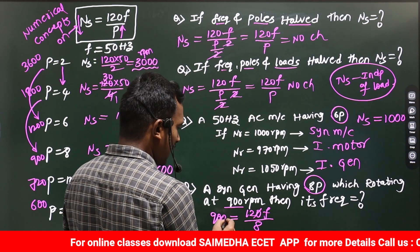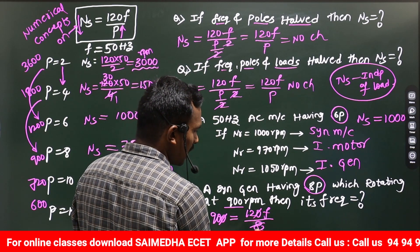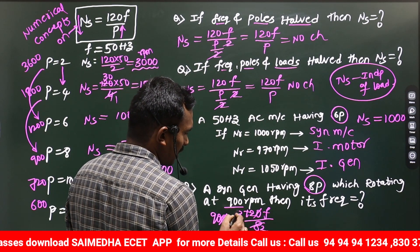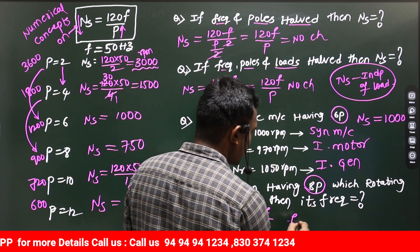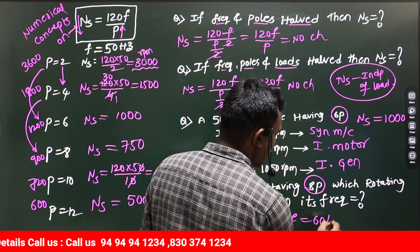So, zeros cancel. 4, 2s are 8. And 4, 3s are 12. 3, 1s are 3. 3, 30s are 90. So, 2 will come here. So, frequency F equals 60 hertz.